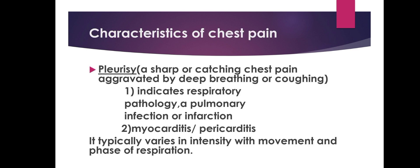Characteristics of chest pain. Pleuritic chest pain is a sharp chest pain aggravated by deep breathing or coughing. It can occur due to respiratory pathology and also due to myocarditis or pericarditis, indicating pulmonary infection or infarction. It typically varies in intensity with movement and phase of respiration.